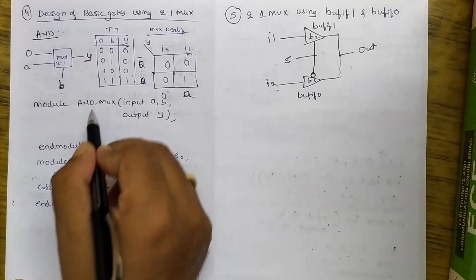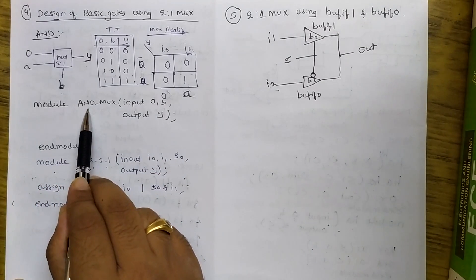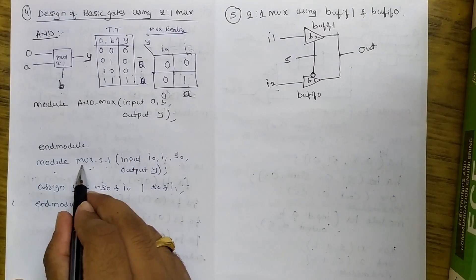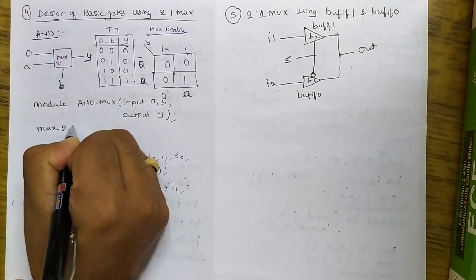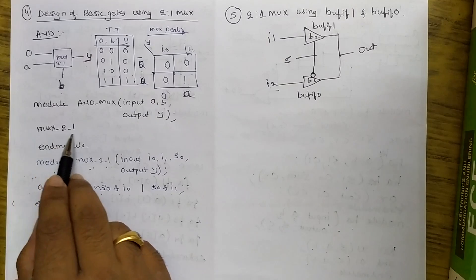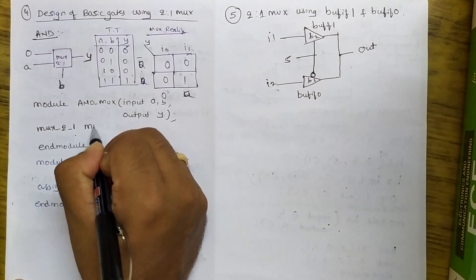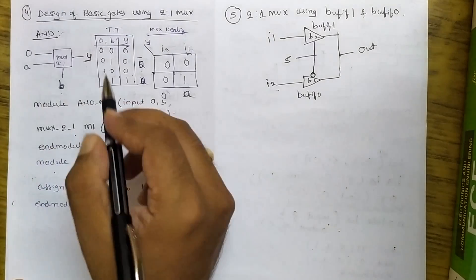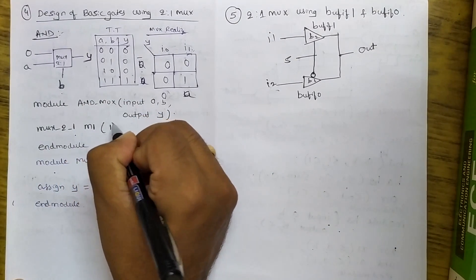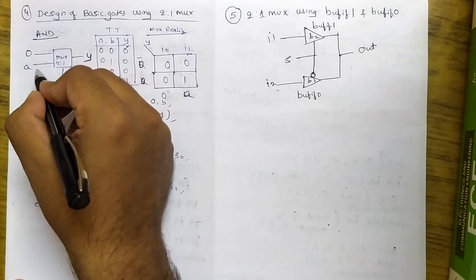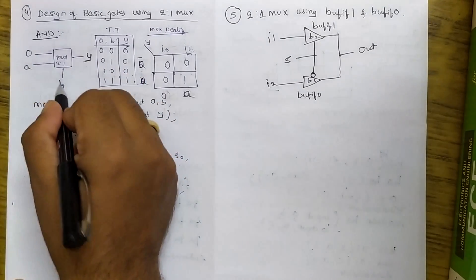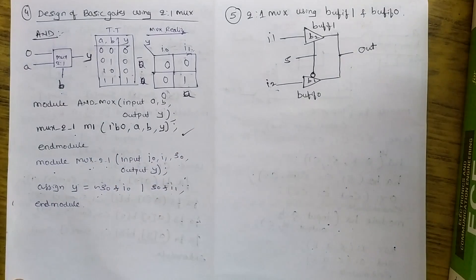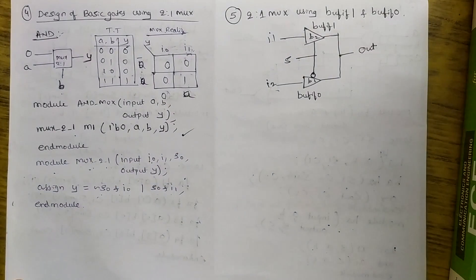The MUX code is ready. Now I call it inside the AND gate module. AND gate inputs are A and B, output is Y. I call mux_2_1 with instance name M1. I0 is assigned logic zero (written as 1'b0), I1 is assigned A, the select line is B, and output is Y. End module. This completes the AND gate design using a 2-to-1 MUX. OR gate can be designed similarly.